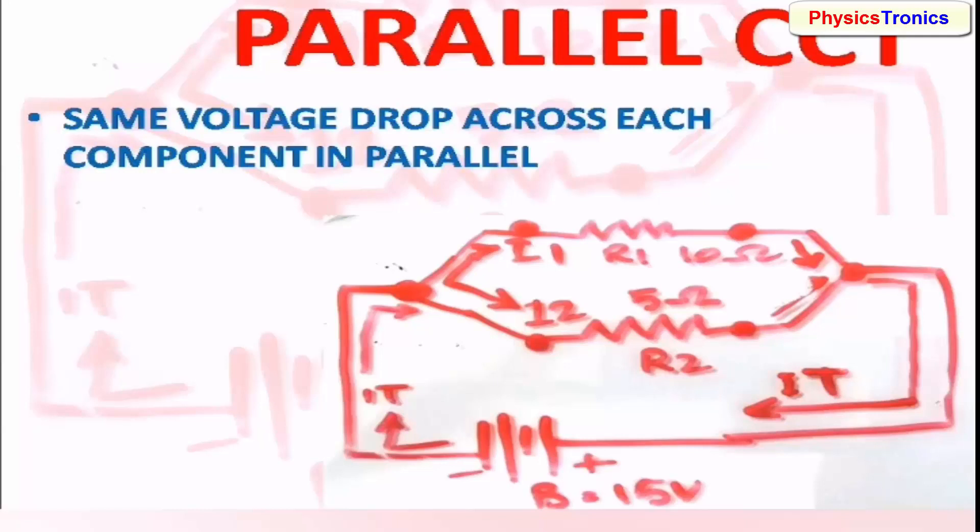Flow of current will depend on the value of the resistance. The higher value of resistance will allow less current. The lower value of resistance will cause more current flow within the circuit.